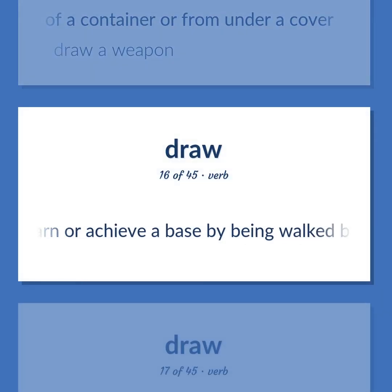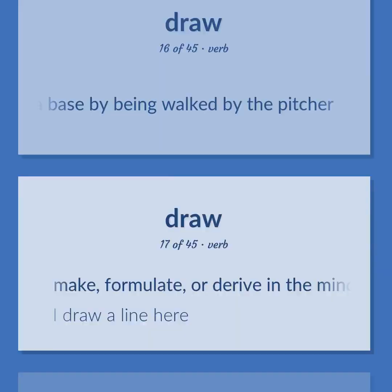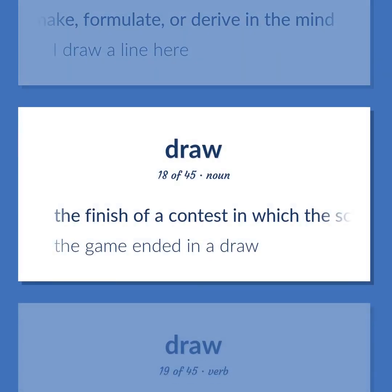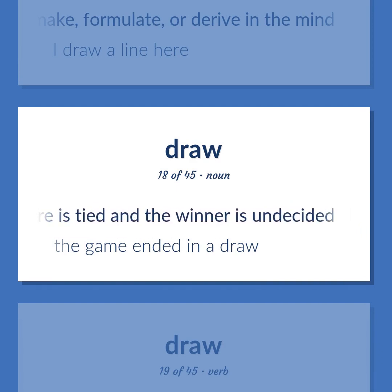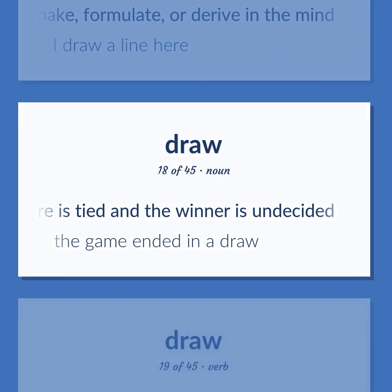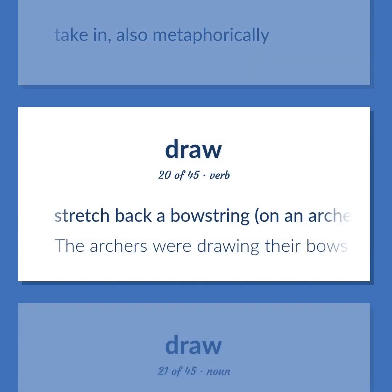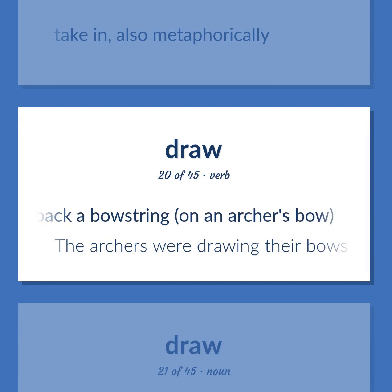Draw: the finish of a contest in which the score is tied and the winner is undecided — 'The game ended in a draw.' Also, to take in, also metaphorically. Also, to stretch back a bowstring on an archer's bow — 'The archers were drawing their bows.' Also, the act of drawing or hauling something. Also, American football: the quarterback moves back as if to pass and then hands the ball to the fullback who is running toward the line of scrimmage.